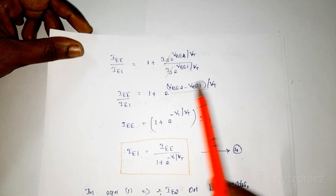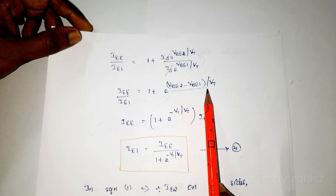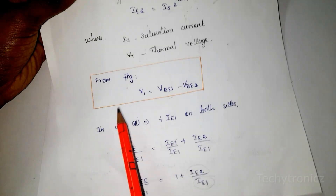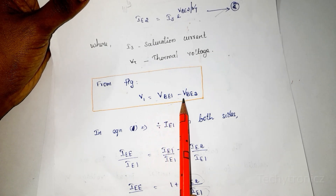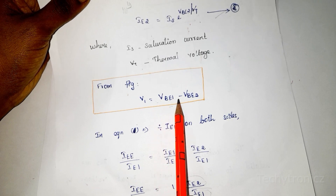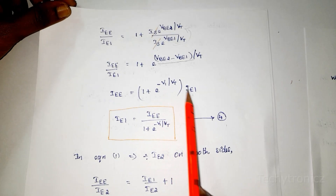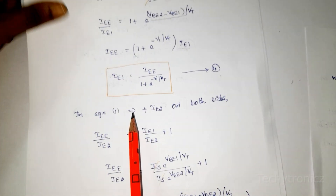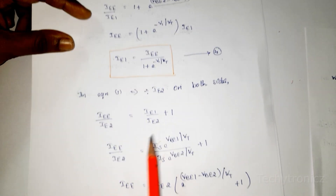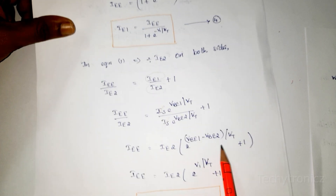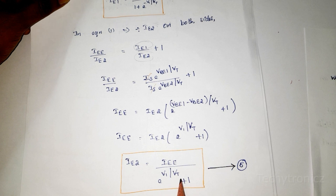The IS terms cancel. Taking the exponential to the numerator gives e^((VBE2 − VBE1) / VT). Since V1 = VBE1 − VBE2, we have VBE2 − VBE1 = −V1, so the exponent becomes −V1/VT. From this we find IEE1. Similarly, dividing by IEE2 on both sides and simplifying gives IEE2 = IEE / (e^(V1/VT) + 1).